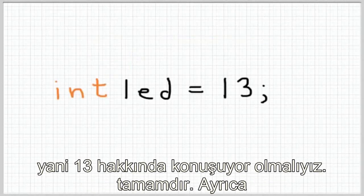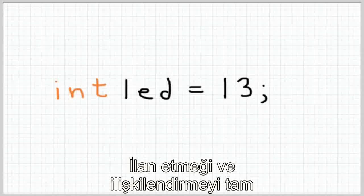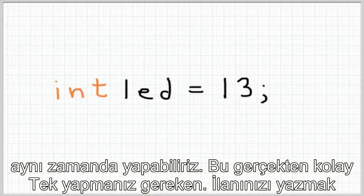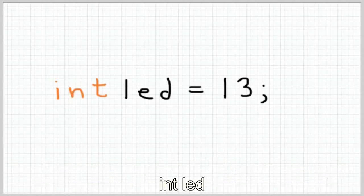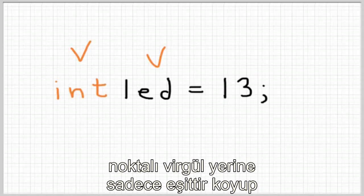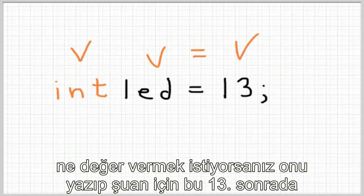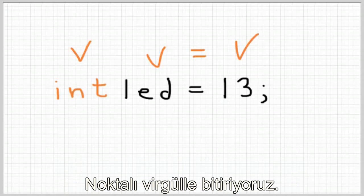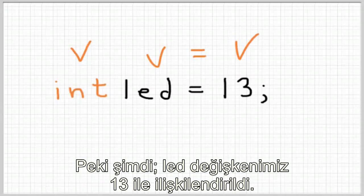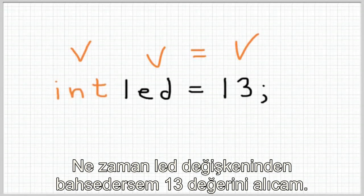You can also initialize and declare a variable at the same time. All you do is write your declaration — 'int led' — and instead of a semicolon you set it equal to whatever value you want, in this case 13, then finish it with a semicolon: 'int led = 13;'. Now the variable 'led' has been declared and initialized to the value 13, so anytime you refer to the 'led' variable you will get the value 13.